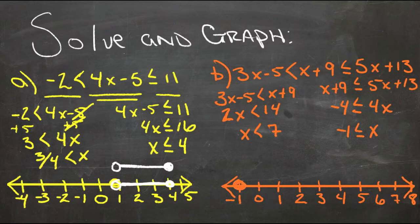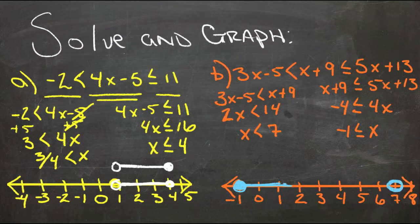So it can be negative 1. Let's change colors. It can be negative 1, or it can be anything bigger, up to 7, and it can't quite be 7. It can just butt up against it there. So x is less than 7, and then anything in between. That's it.